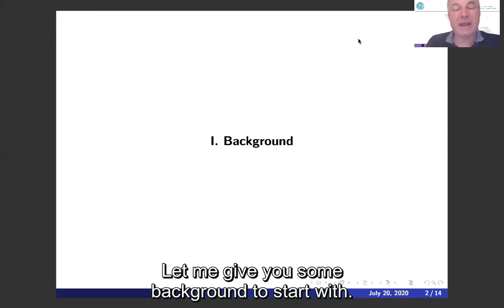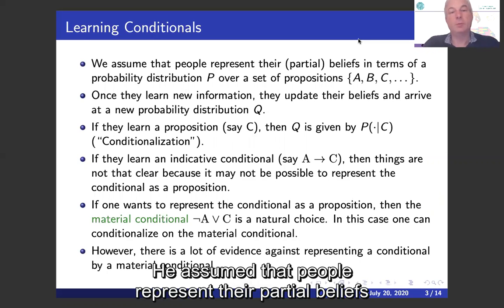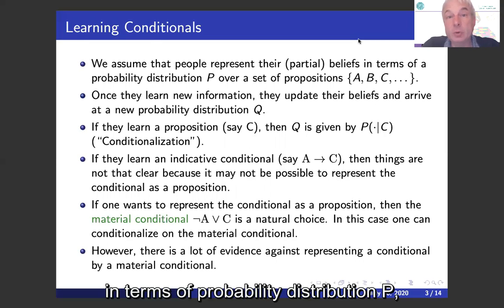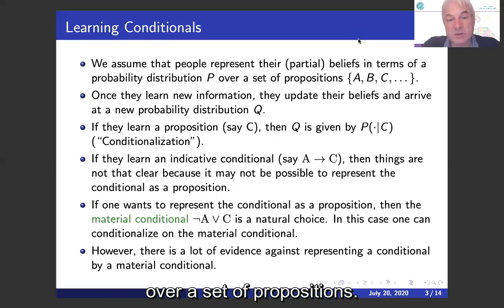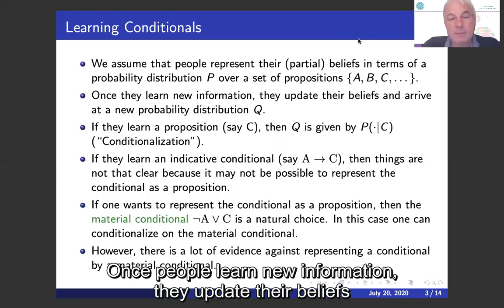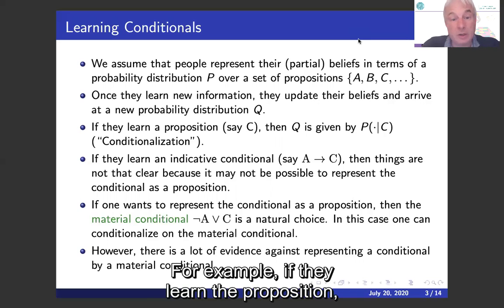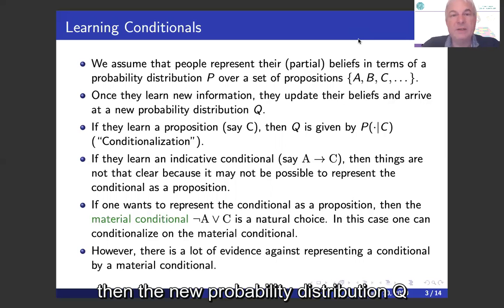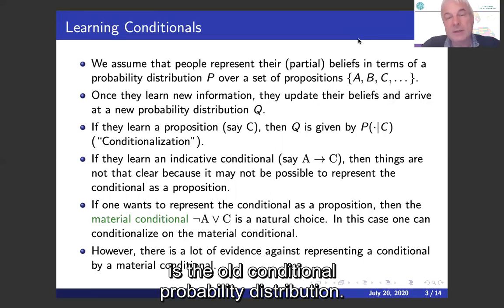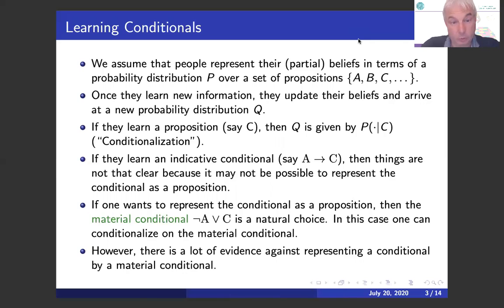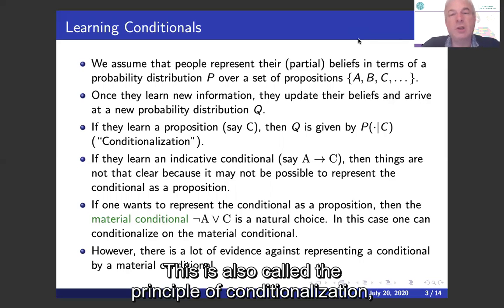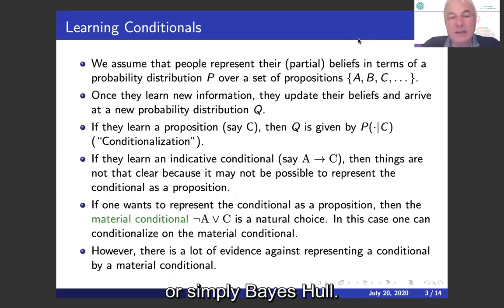Let me give you some background to start with. We assume that people represent their partial beliefs in terms of a probability distribution P over a set of propositions. Once people learn new information, they update their beliefs and arrive at a new probability distribution Q. For example, if they learn a proposition, then the new probability distribution Q is the old conditional probability distribution. This is also called the principle of conditionalization, or simply Bayes' rule.